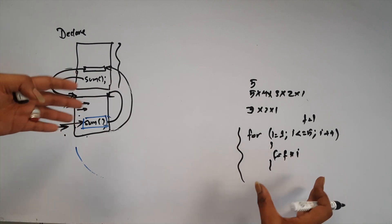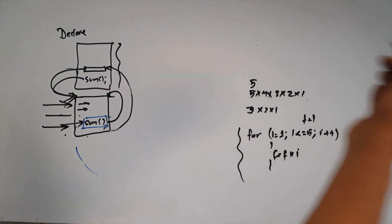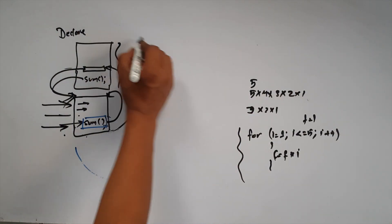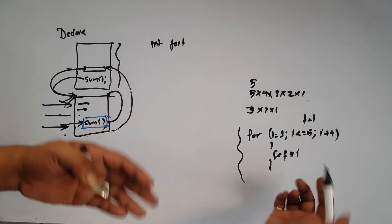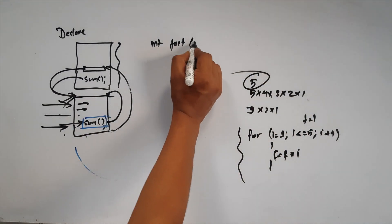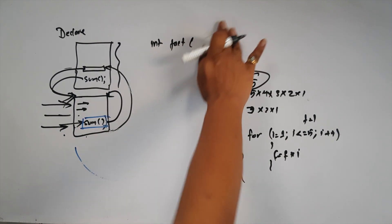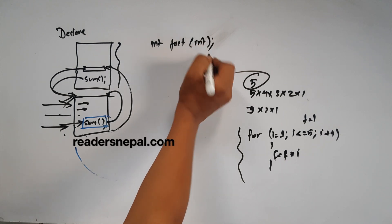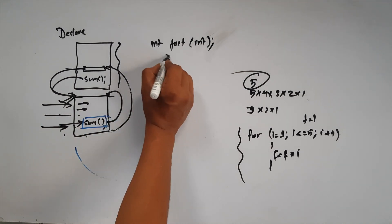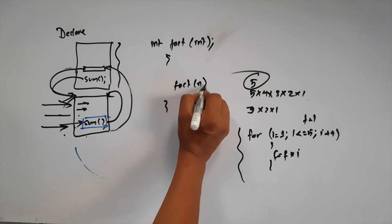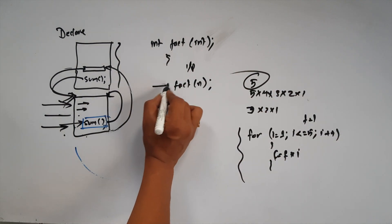But we want to use a recursive function. The function is called 'fact'. If we get input 5, we need to supply it. We declare the value of n as an integer — with argument and with return value. We call this function from the main module.